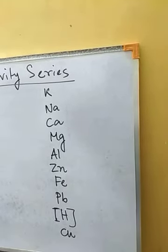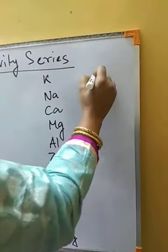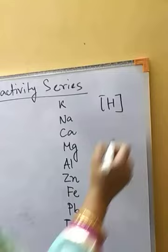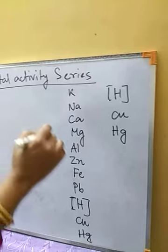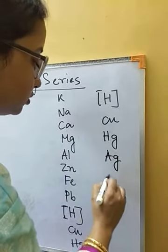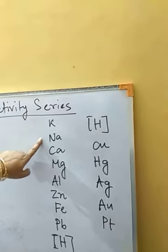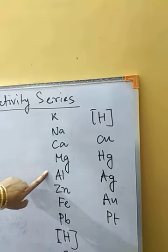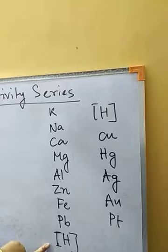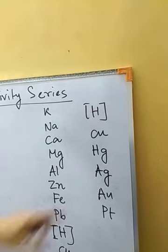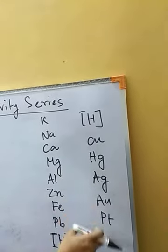After hydrogen we have copper, mercury, silver (Ag), gold, and then platinum. So the complete series is: potassium, sodium, calcium, magnesium, aluminum, zinc, iron, lead — then hydrogen — then copper, mercury, silver, gold, and platinum. The metals above hydrogen are more active than hydrogen, and the metals below hydrogen — copper, mercury, silver, gold, platinum — are less active than hydrogen.